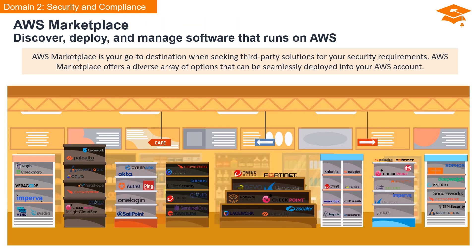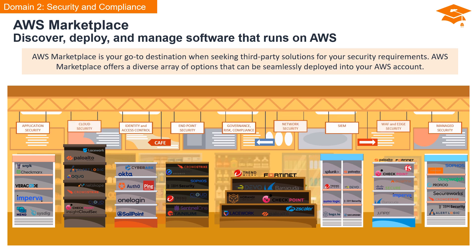If you need third-party or ISV — independent software vendor — security software, AWS Marketplace serves as your primary hub for sourcing third-party solutions to meet your security needs. Offering a diverse range of options, AWS Marketplace enables seamless deployment into your AWS account. Third-party software security categories in AWS Marketplace encompass application security, cloud security, identity and access controls, endpoint security, governance, risk and compliance, network security, security information and event management (SIEM), web application firewall and edge security, and managed services security.